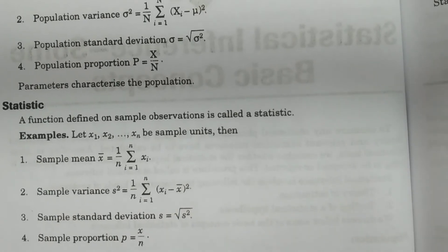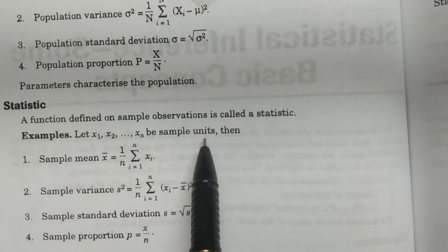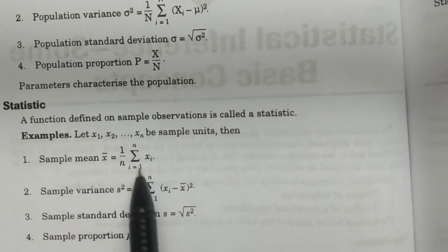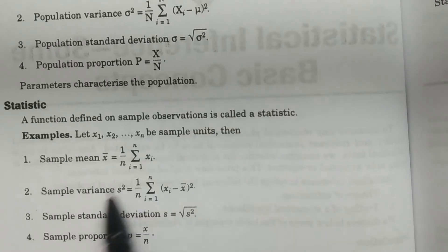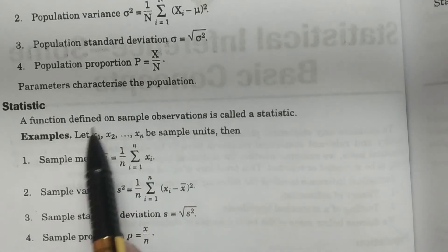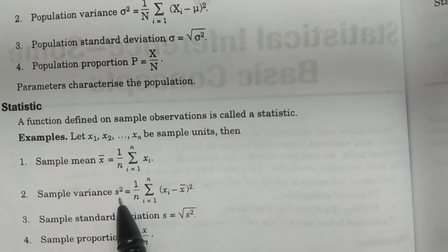That is the reason we use the notation x1, x2, and so on up to xn for sample units. Then sample mean x̄ is denoted by 1 by n, summation i equals 1 to n of xi. And sample variance s square equals 1 by n, summation of (xi minus x̄) whole square. If you calculate the mean for observations x1, x2, xn, you get the sample mean x̄; and the variance calculation gives you sample variance s square.